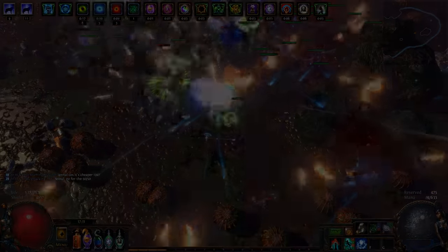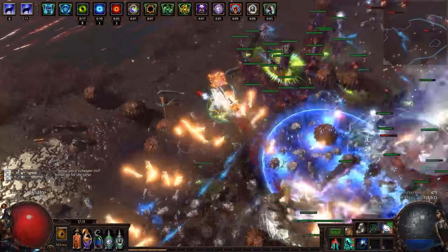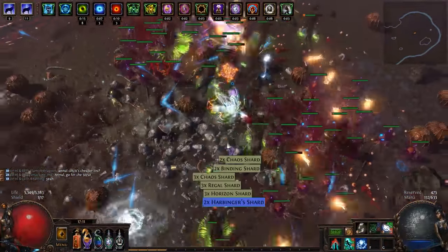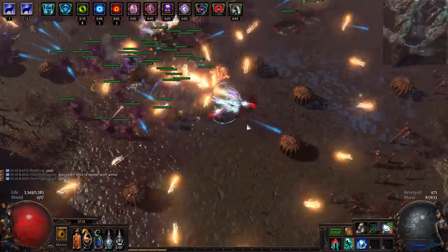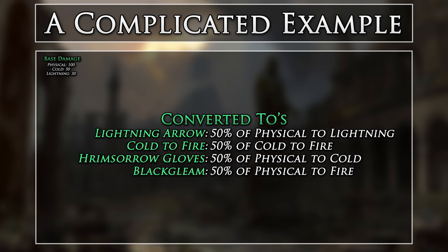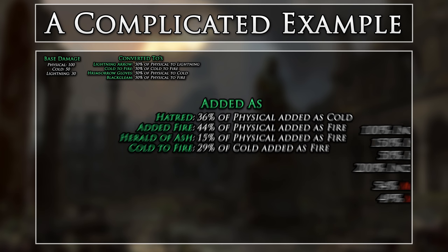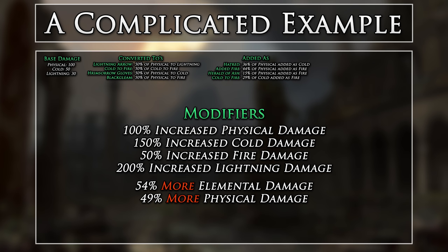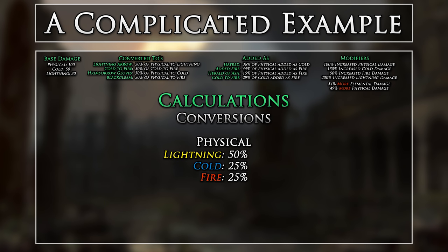I hope you all brought your calculators. Let's take a look at a complex example that makes use of multiple Converted Tos and added as conversions, as well as flat damage, increased, and more modifiers. This example will not be efficient, but will show how these conversions interact and are calculated. To start, let's say we have 100 physical damage, 50 cold damage, and 30 lightning damage. For Converted Tos, we have Lightning Arrow, Cold to Fire, Hrimsarrow Gloves, and Black Gleam. For added as, we have Hatred, added fire, Herald of Ash, and Cold to Fire. We are using the same Converted Tos as in our original example, plus a new one — Cold to Fire — so we will have the following conversion percentages.